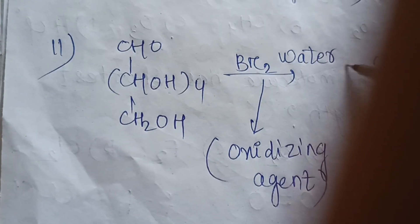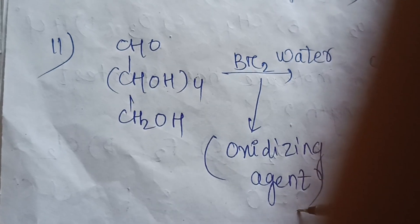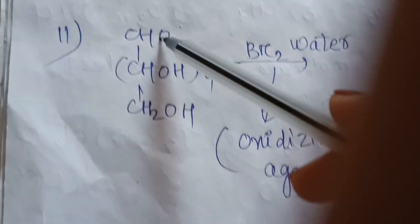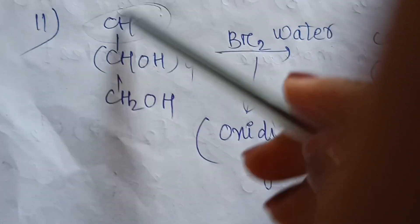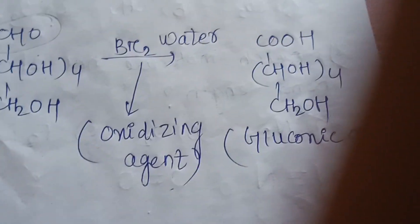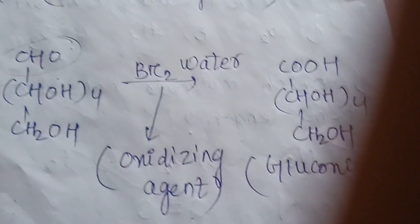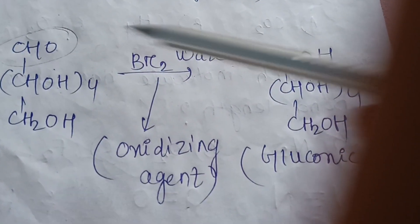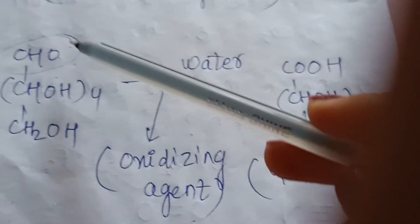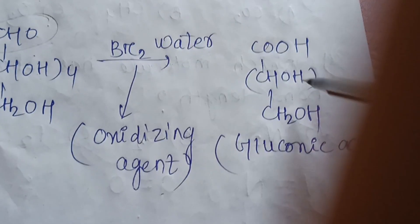Question number 12: glucose reacts with bromine water. This converts the aldehyde group to a carboxylic acid. The product is gluconic acid — aldehyde to carboxylic acid conversion.